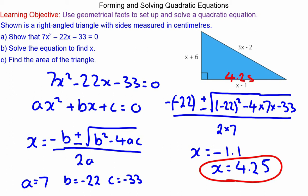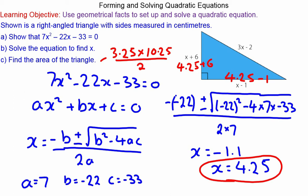Putting 4.25 into our right-angle triangle, the base is 3.25 and the height is 10.25. We can now work out the area of the right-angle triangle by doing base times height divided by 2, which comes out as 16.7 square units.